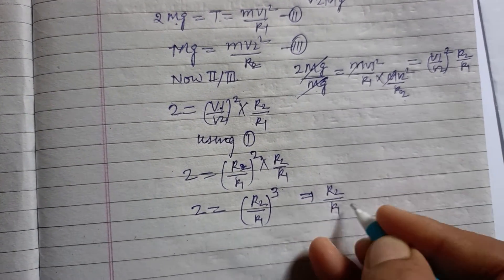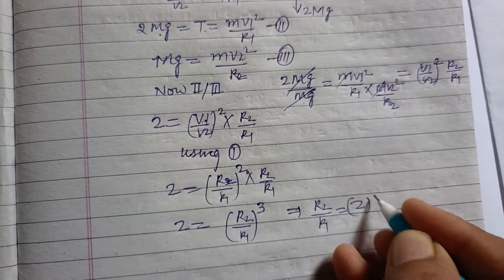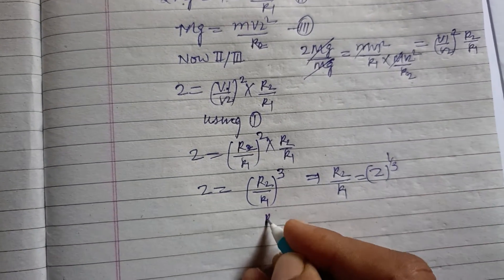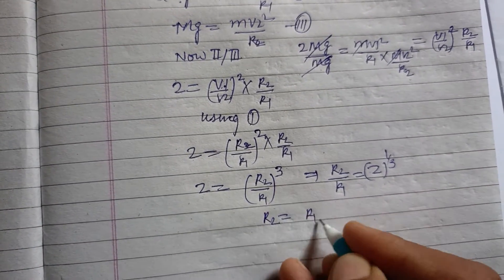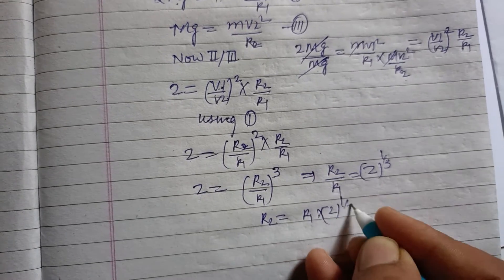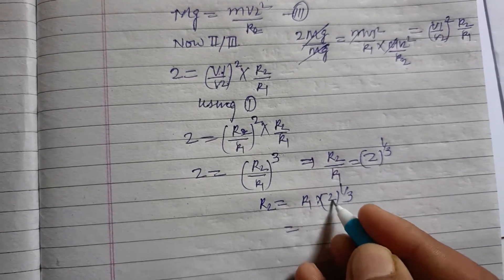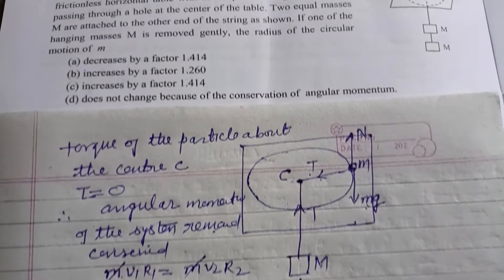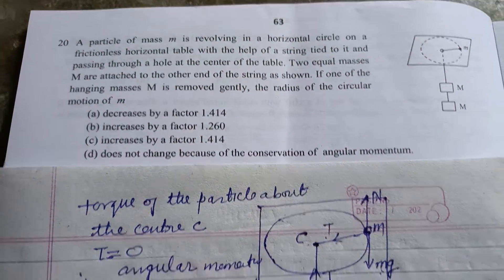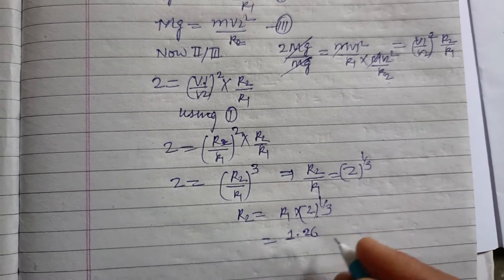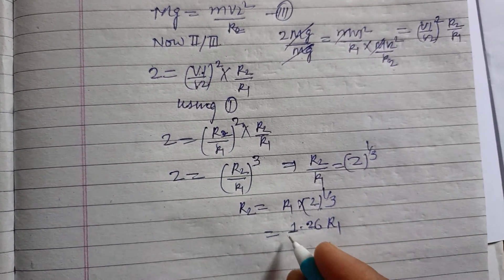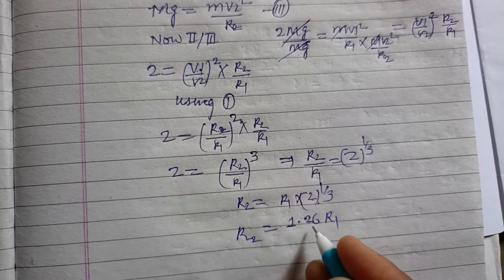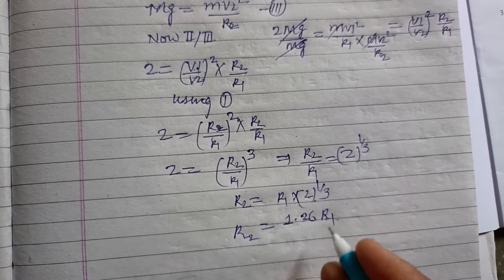Therefore, R2 upon R1 equals 2 to the power 1 by 3, or R2 equals R1 times 2 to the power 1 by 3. Taking cube root of 2 which is 1.260, we got R2 equals 1.260 R1.